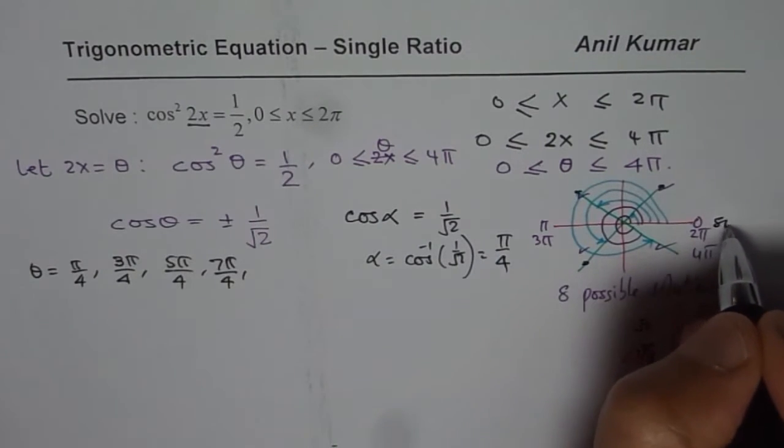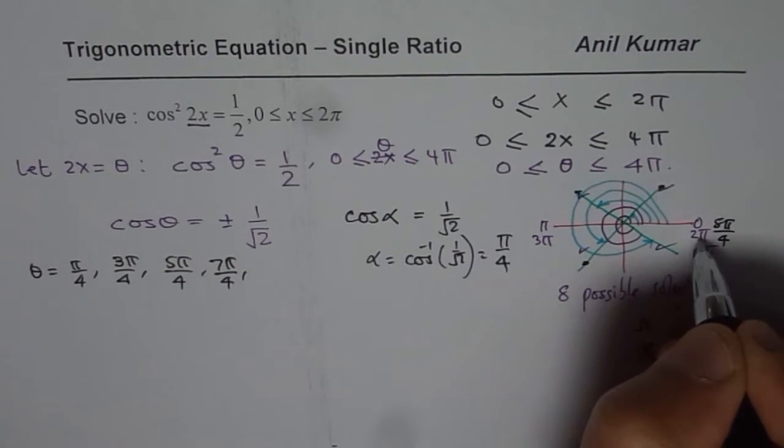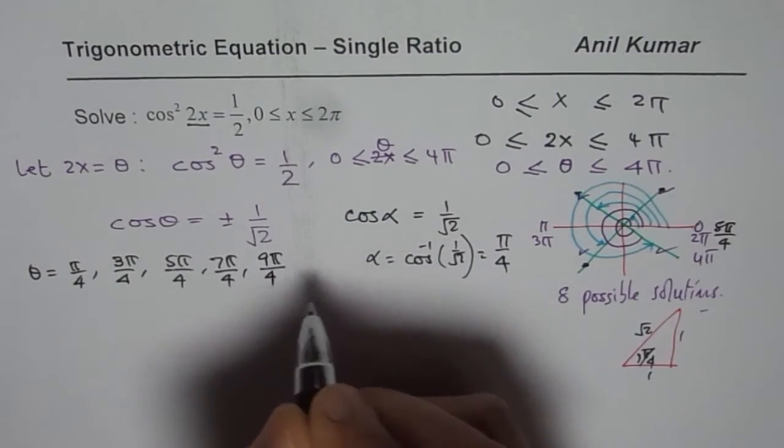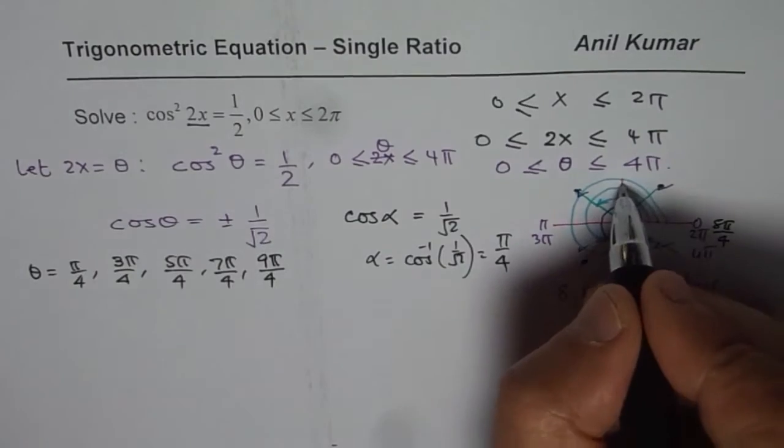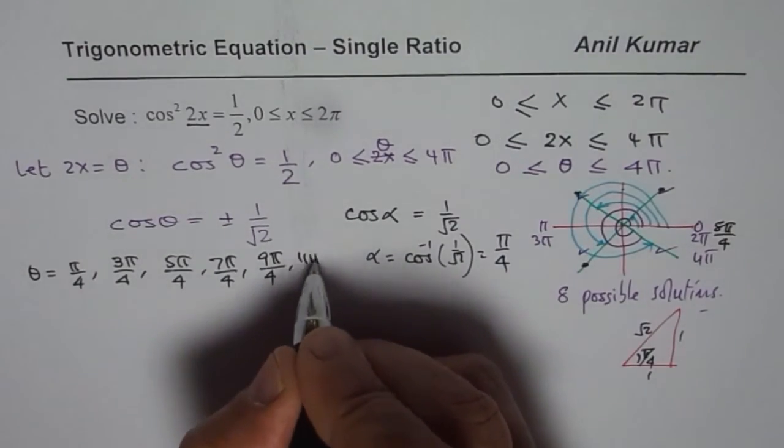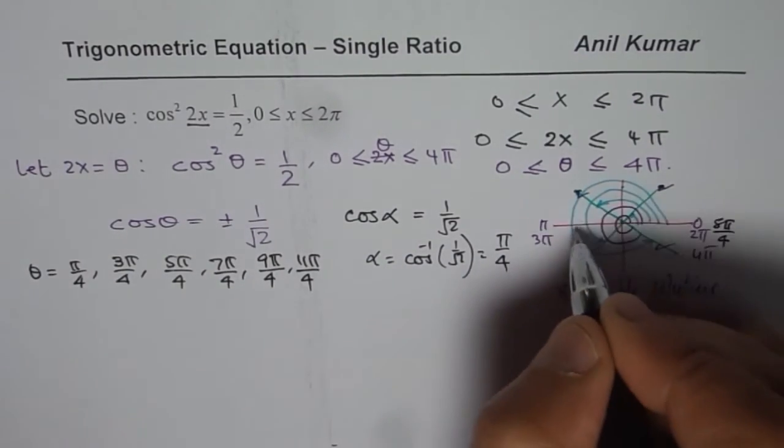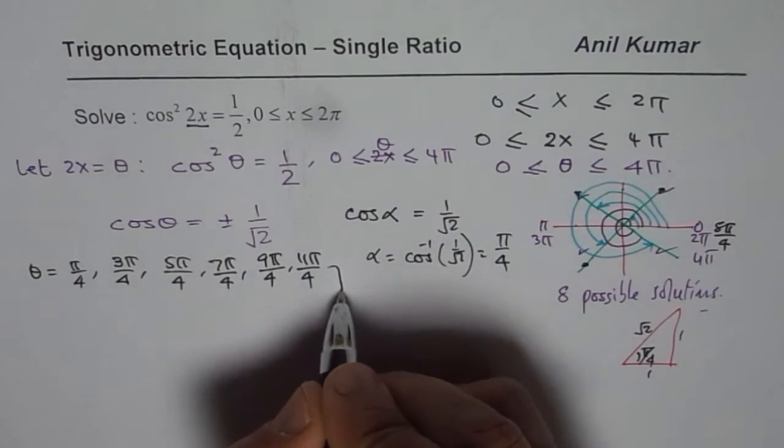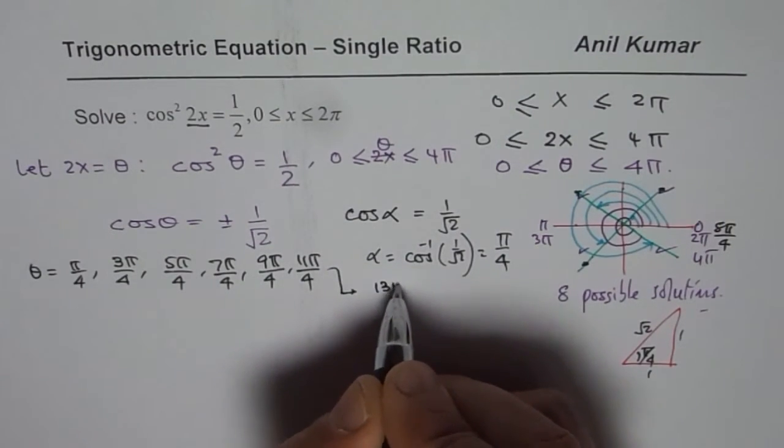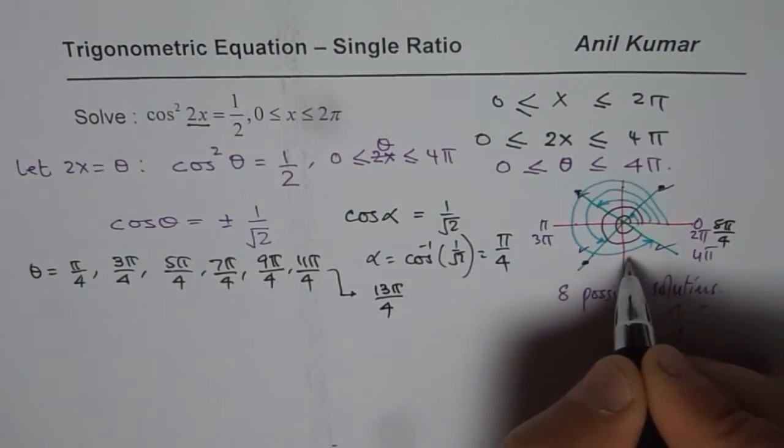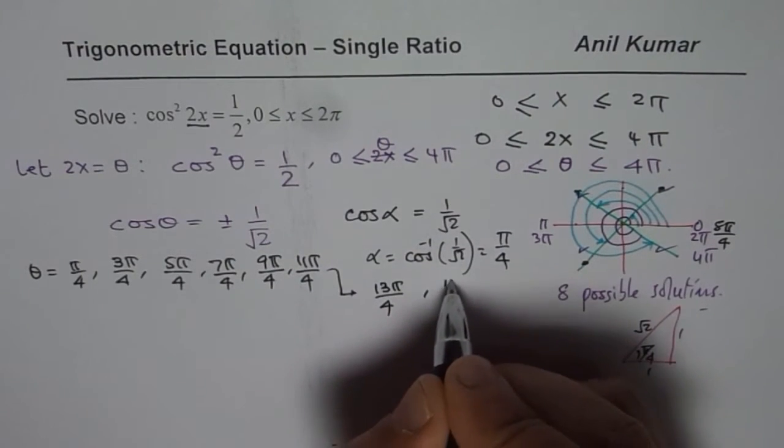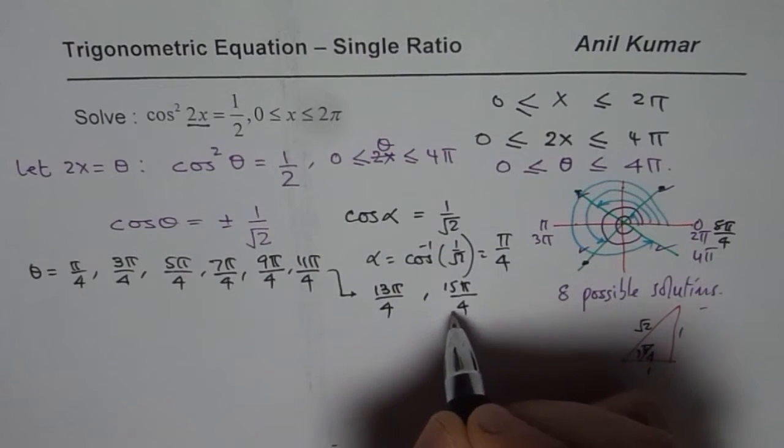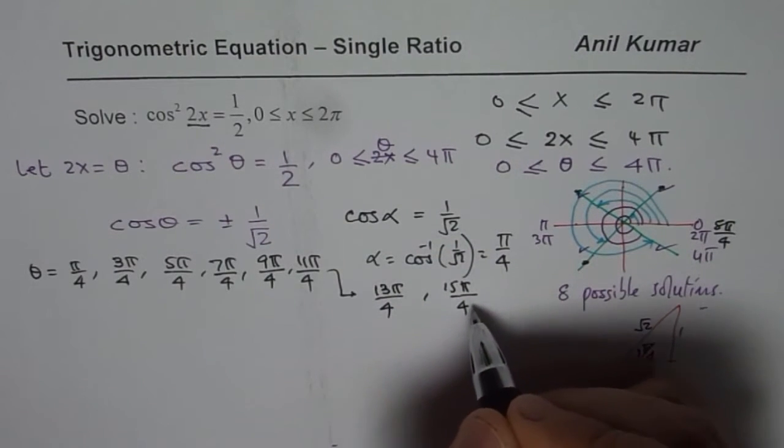Then this is 8π/4, that is 2π, and then you go one more. So we get 9π/4, 11π/4, 13π/4, and 15π/4. Do you see how I counted? 15π/4. 16 will make it 4π.